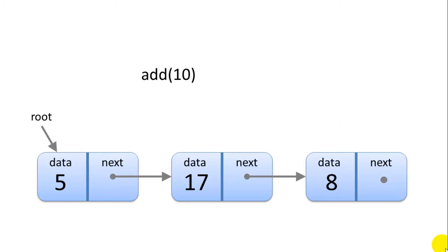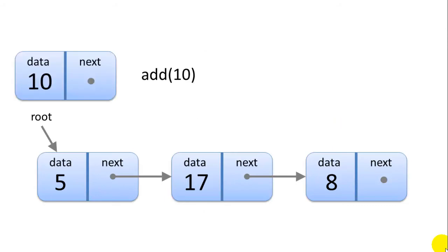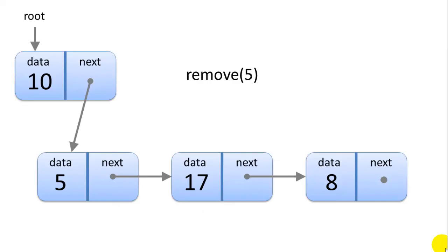Let's say we want to add 10 to our list. First we'll create a new node. We'll put 10 in the data block and we'll change our next pointer so that it points to the root node. Then we'll change our root pointer so that it points to our new node. Our add operation is finished — it's that simple.